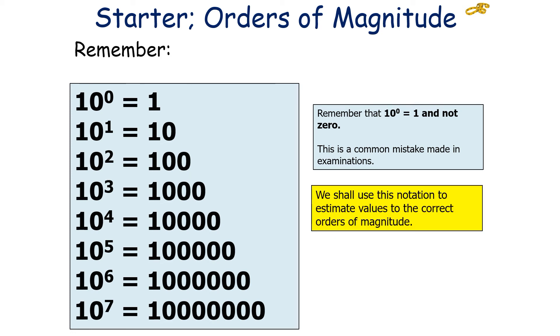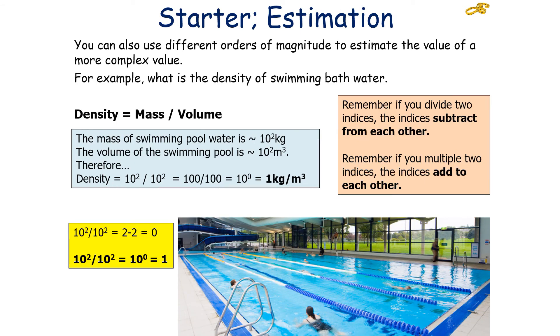We shall use this notation to estimate values to the correct order of magnitude, and we can then combine the orders of magnitude when estimating more than one quantity. This is important to note, that if, for example, you want to estimate a more complex value, such as density, well, as you know, density is equal to mass over volume. If you estimate the mass of the water to be 10 to the 2, and you estimate the volume of the pool to be 10 to the 2, to work out the density, it's 10 to the 2 over 10 to the 2, so it's 100 over 100, so therefore, it's 10 to the 0, it's 1 kilogram per meter cubed. Remember, if in your estimation, with the equation that you use, if you are dividing two indices, the indices must subtract from each other. In this example, 10 to the 2 divided by 10 to the 2, so you do 2 minus 2, which equals 0, so your overall answer is 10 to the 0, so it's 1.